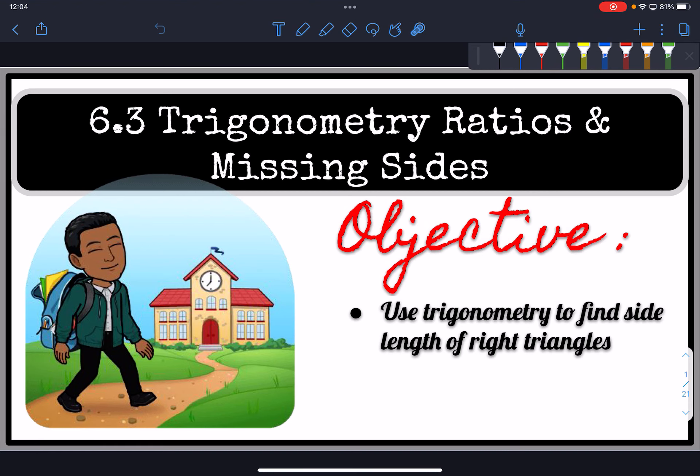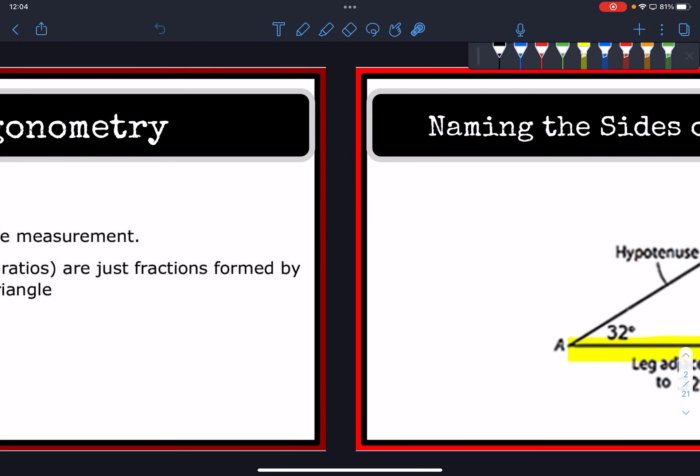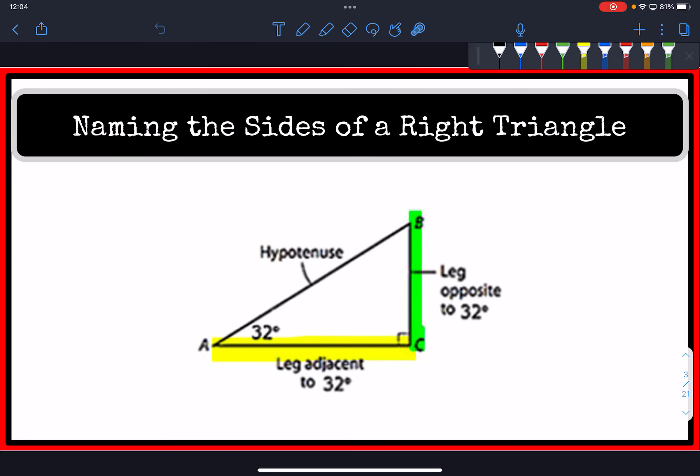In Lesson 6.3, Trigonometry Ratios and Missing Sides, you're going to use the trigonometry ratios to find the side length on right triangles. Trigonometry is the study of triangle measurements. The trigonometric ratios, also known as trig ratios, are just fractions formed by the length of the sides on a right triangle, and they rely on naming the three sides of a right triangle.